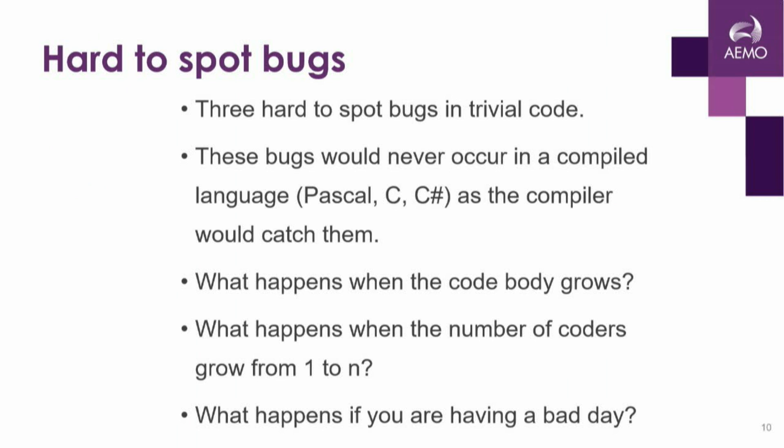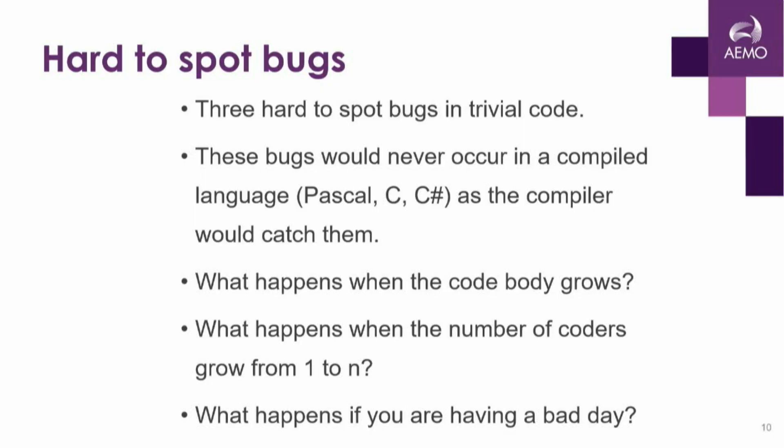We've had three hard-to-spot bugs in trivial code. These bugs would never have occurred in a compiled language like Pascal — my background — or C or C#, as the compiler would have caught them. What happens when the body of code grows? What happens when the number of coders on your team grows from one to N? And what happens if you're simply having a bad day?